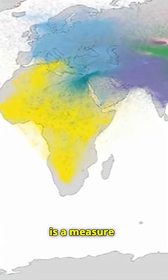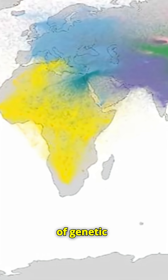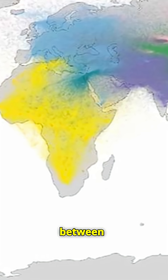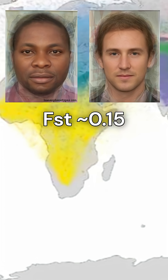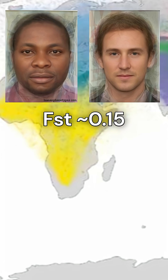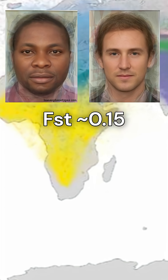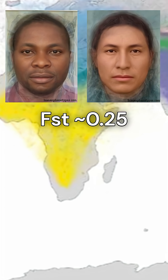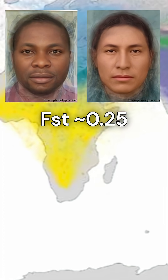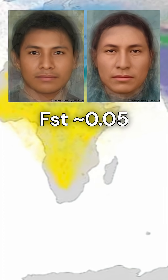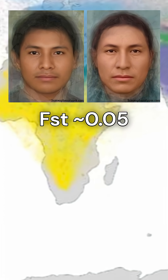Fixation index (FST) is a measure of genetic differentiation between populations. It tells us how much of the total genetic variation is due to differences between populations, as opposed to variation within populations. An FST close to zero reflects populations that are closely related to one another.